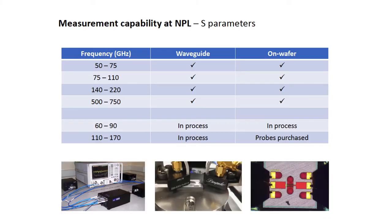Next I want to talk about some recent research activities at NPL. Before that, I want to show our measurement capability at NPL for S-parameters. We have very good capability below 50 GHz; in this table I only show our measurement capability at millimeter-wave frequencies. Above 50 GHz, we have coverage for waveguide bands: 50–75 GHz, 75–110 GHz, 140–220 GHz, up to 500–750 GHz. We have on-wafer probes for all these waveguide bands. By the end of this year we are also going to acquire a pair of E-band extender heads to have measurement capability for E-band.